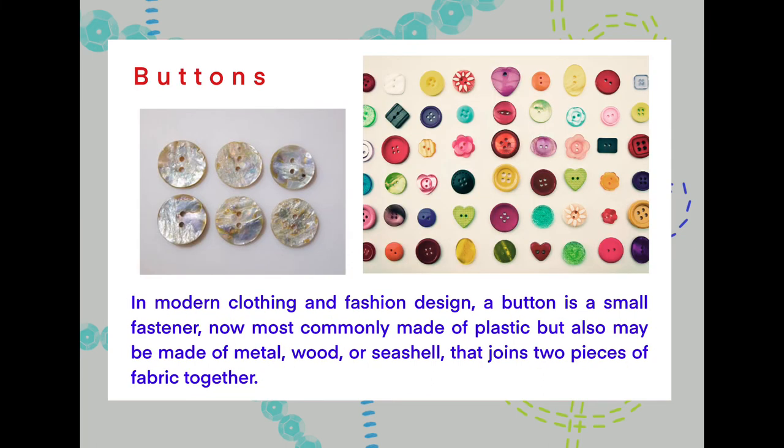Now let's take a look at buttons. In modern clothing and fashion design, a button is a small fastener, most commonly made of plastic but also may be made of metal, wood, or seashell, that joins two pieces of fabric together. If you're wondering what I meant by seashell, I've put an image there of a button made from seashell and you get these wonderful reflective tones coming off it.